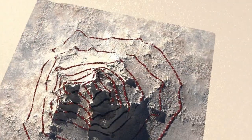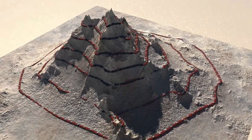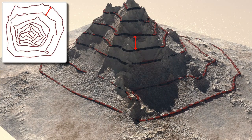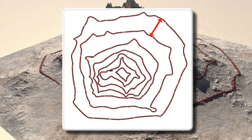Contour interval is a vertical height difference between two successive contour lines. On the half-degree map, the contour interval is 50 meters, and the same is 20 meters on the quarter-degree maps.